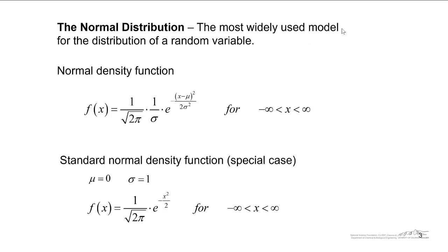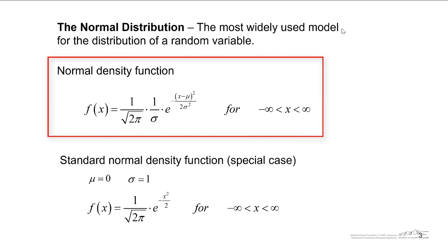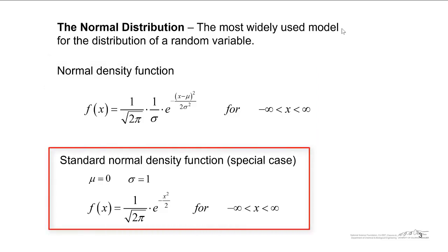The density function for the normal distribution is given here. It's very complex and complicated — I definitely do not expect you to memorize this. We have the mean, which is mu, and sigma, which is the standard deviation. I'll talk about the standard normal distribution in a follow-up screencast, but it's a special case where the mean is zero and the standard deviation is one. The standard normal density function used to be used quite a bit before sophisticated software tools like Excel, Matlab, Mathcad, and Mathematica, but it is still useful in some scenarios.